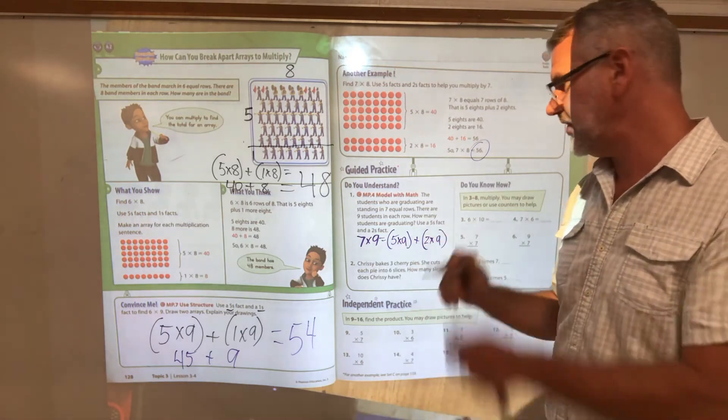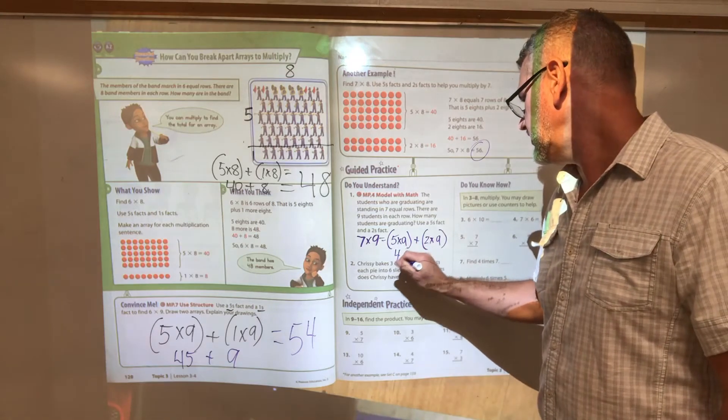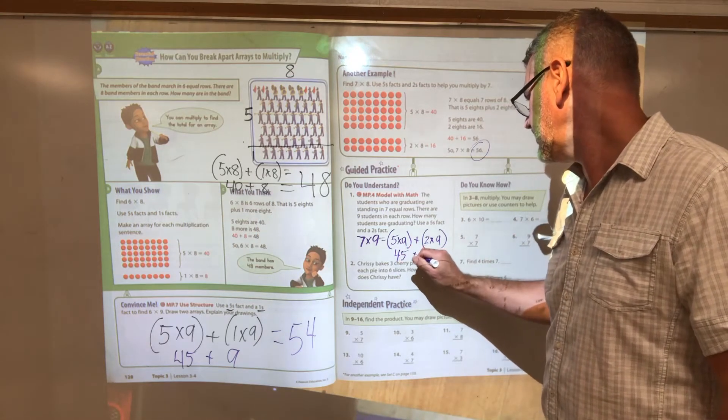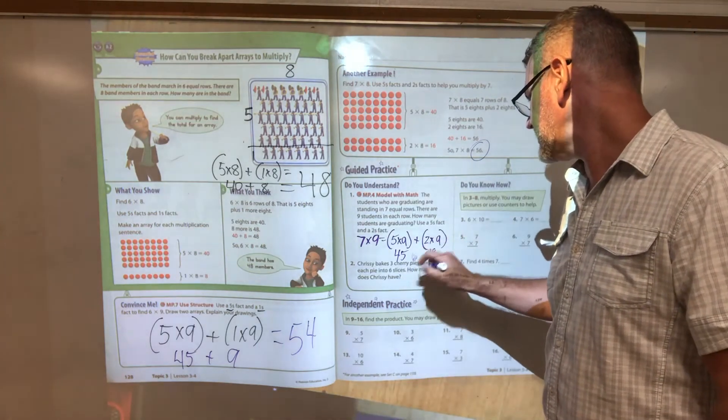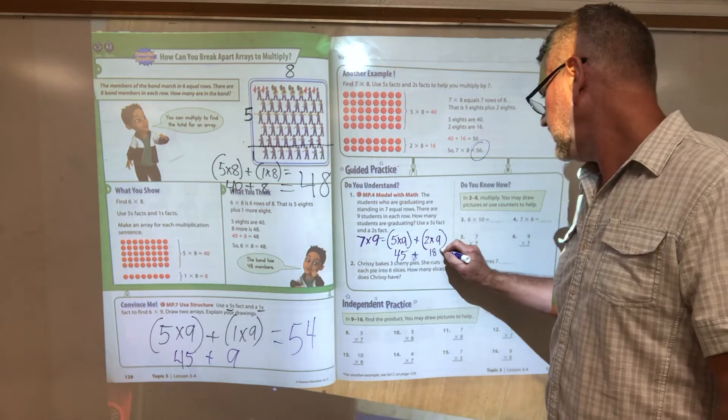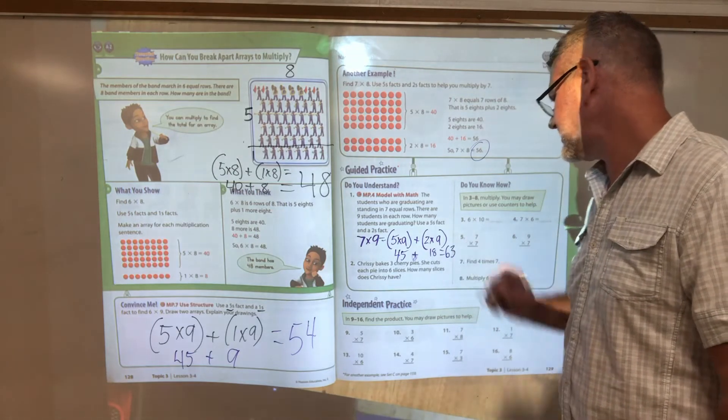Now five times nine, if I do my fingers, it would be forty-five. Two groups of nine is nine plus nine, that's eighteen. And forty-five plus eighteen equals sixty-three.